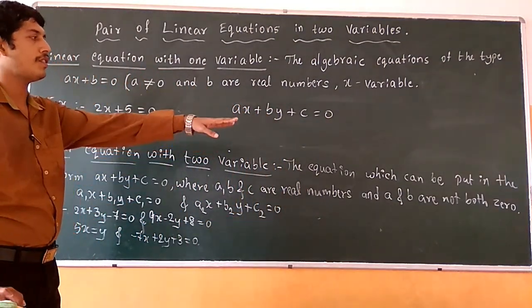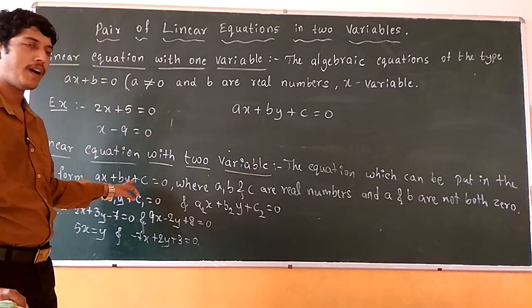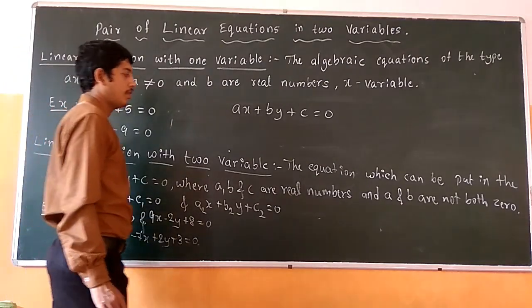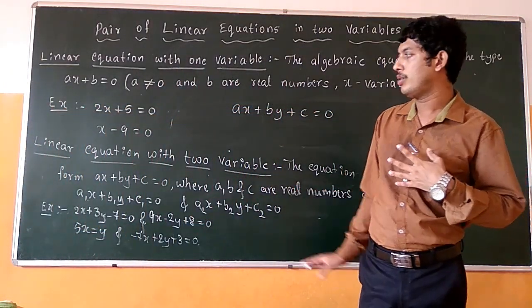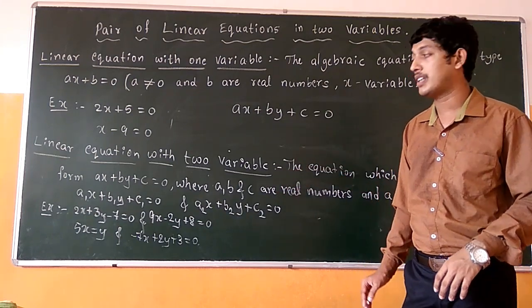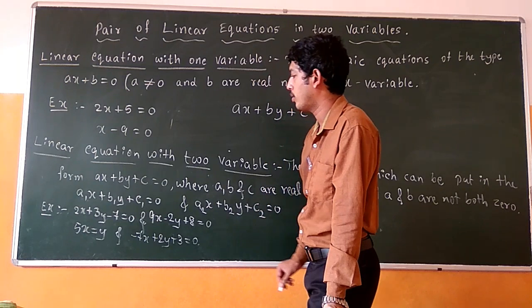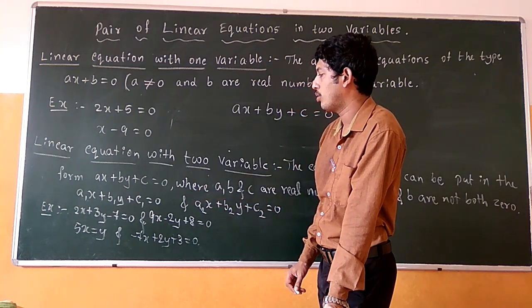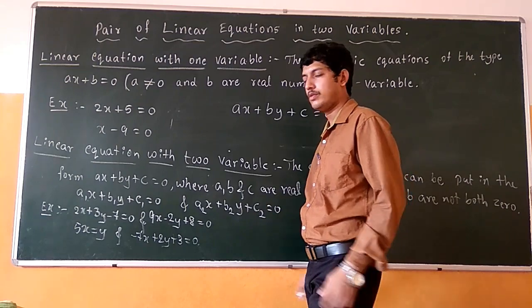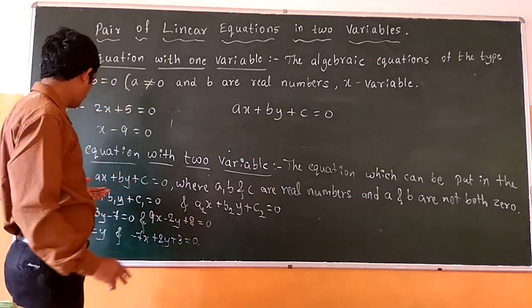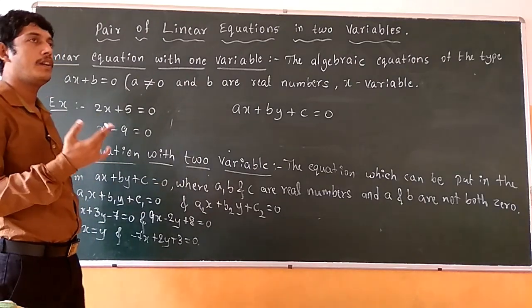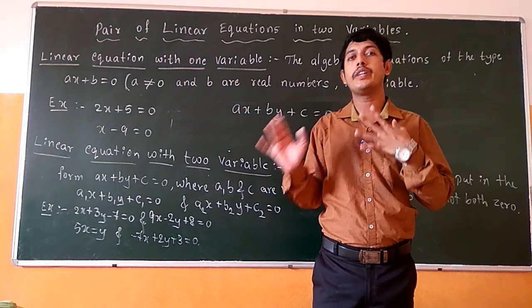Based on that definition, we can frame examples. So 2x plus 3y minus 7 equals to 0, and 9x minus 2y plus 8 equals to 0, and minus 7x plus 2y plus 3 equals to 0 — these are all linear equations in two variables. The general form when two equations are present is: a1x plus b1y plus c1 equals to 0, and a2x plus b2y plus c2 equals to 0.